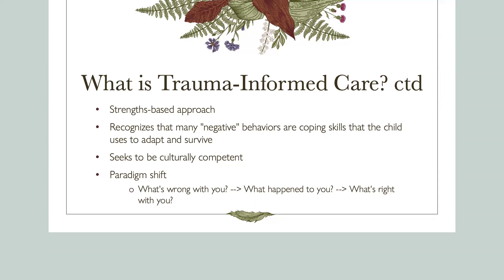It also requires a paradigm shift from 'what's wrong with you' to 'what happened to you' to 'what's right with you.' The 'what's wrong with you' is a very negative approach. 'What happened to you' is more of a trauma-informed approach. And then 'what's right with you' moves into resiliency and those resilient practices, incorporating those to benefit the child and help them cope with the trauma they have experienced so that they can become well-adjusted adults.